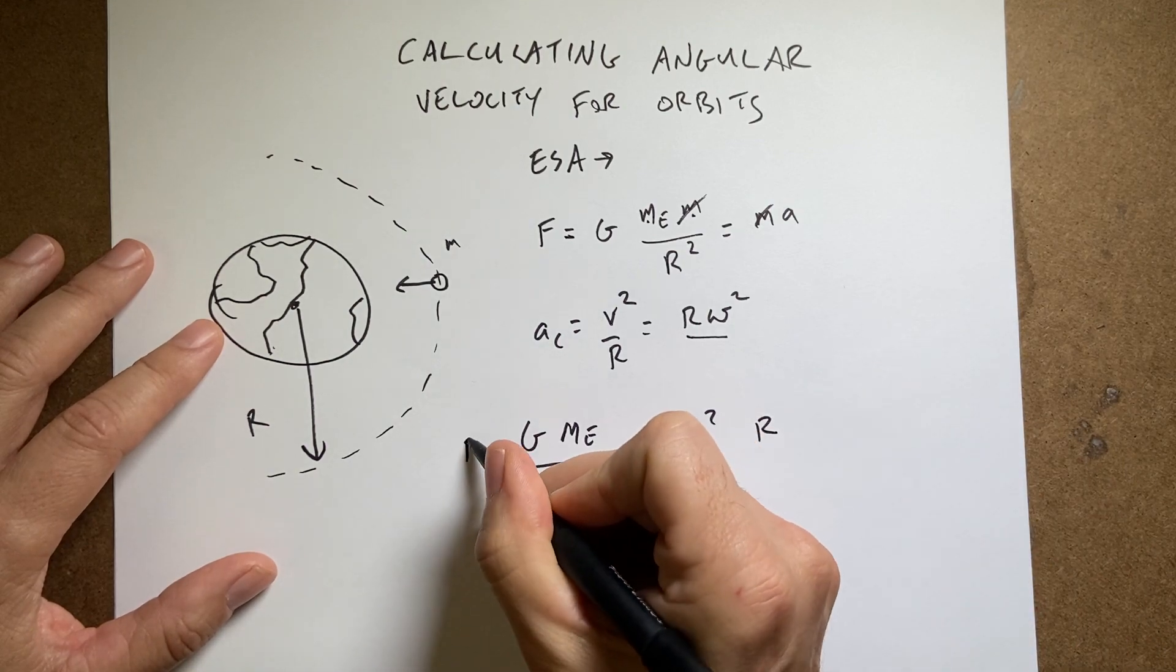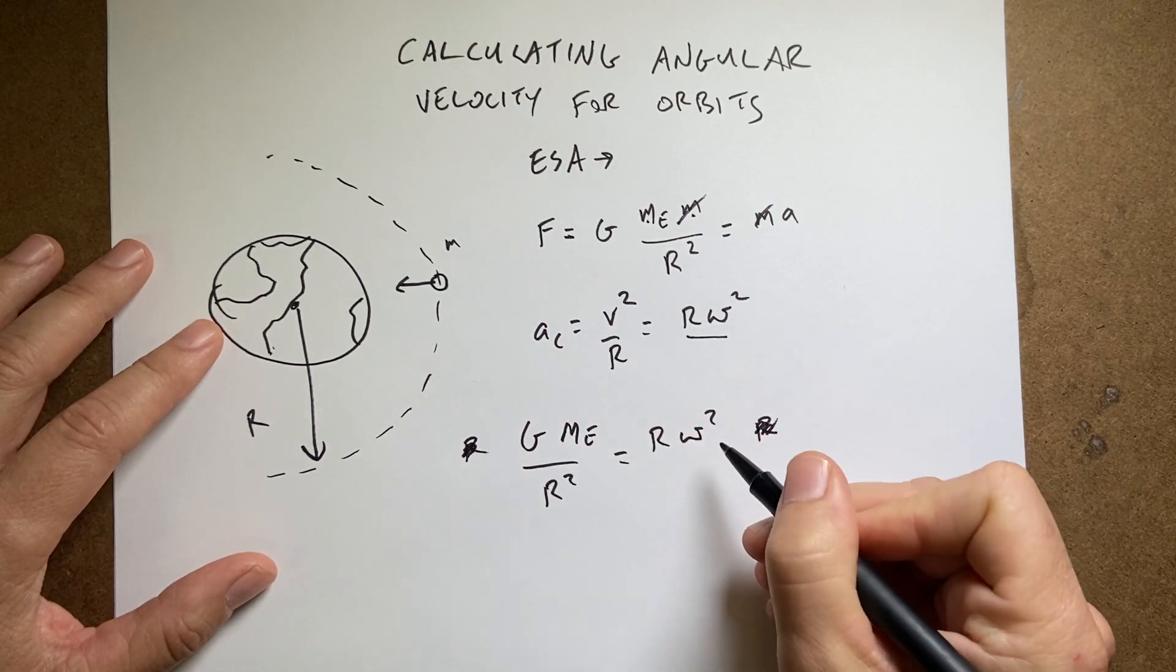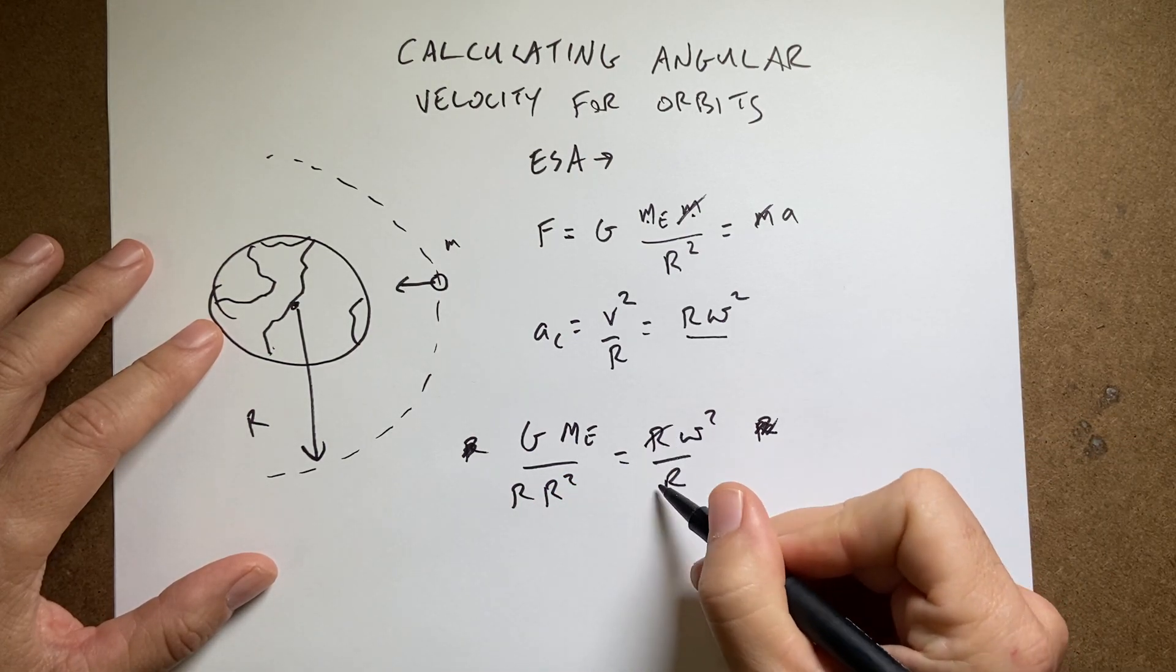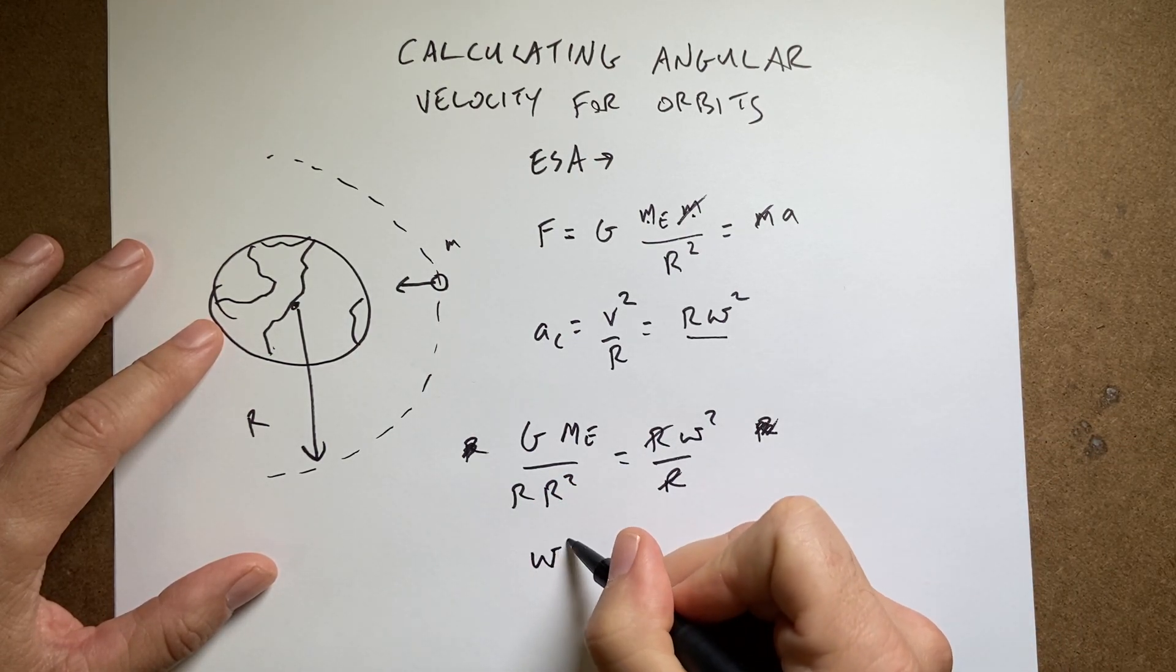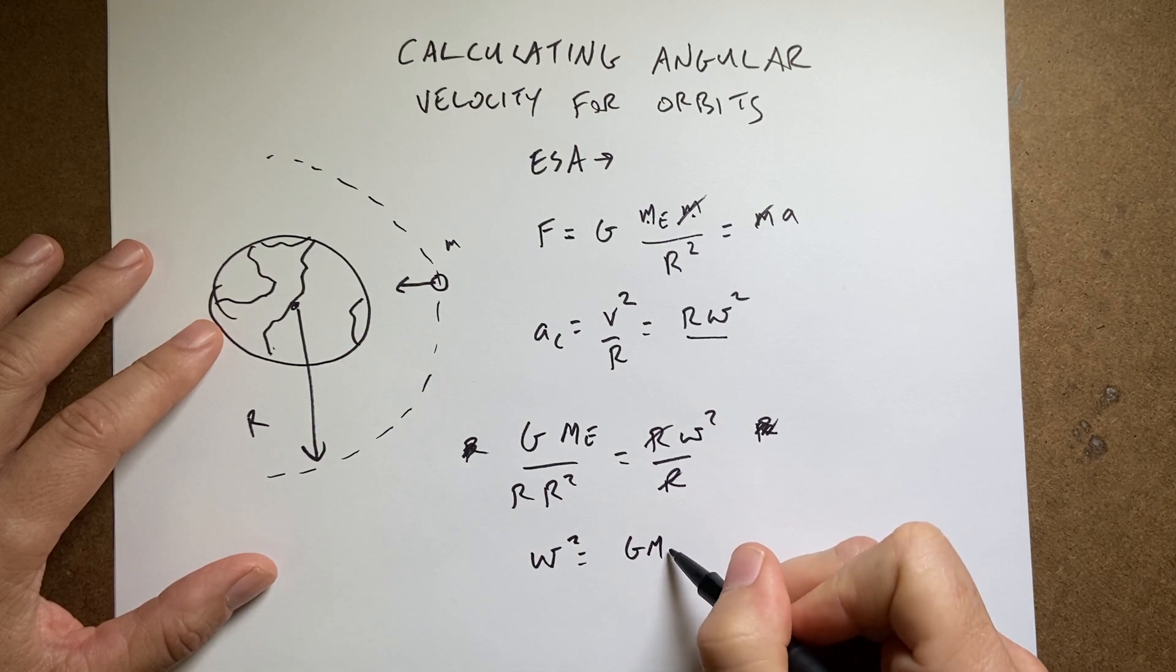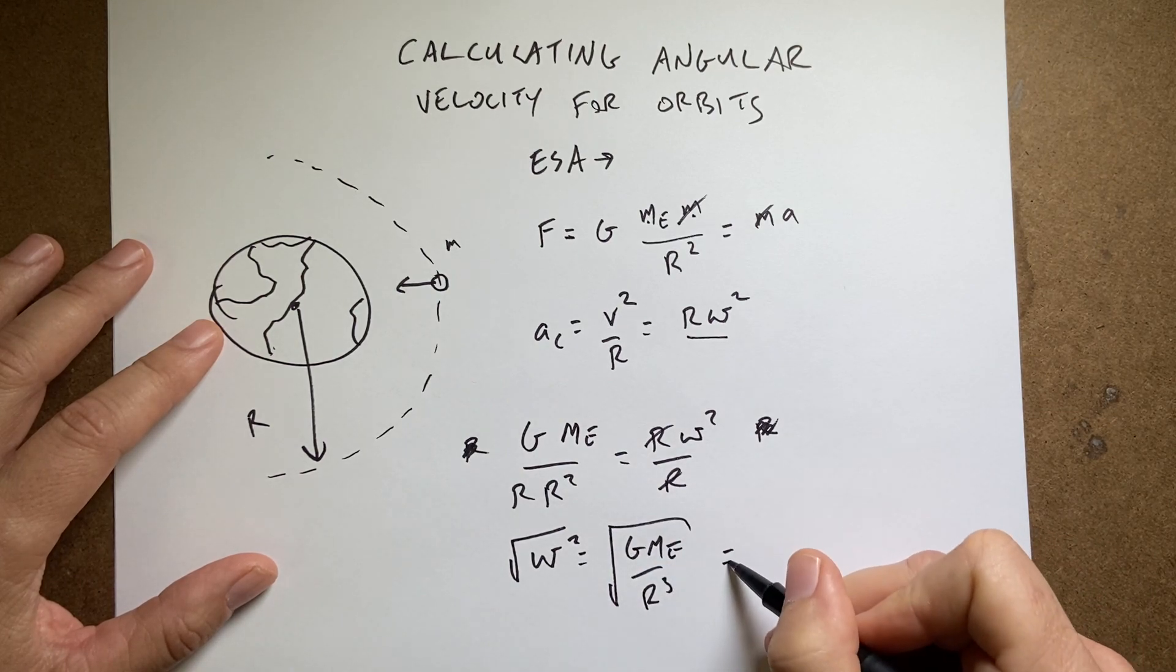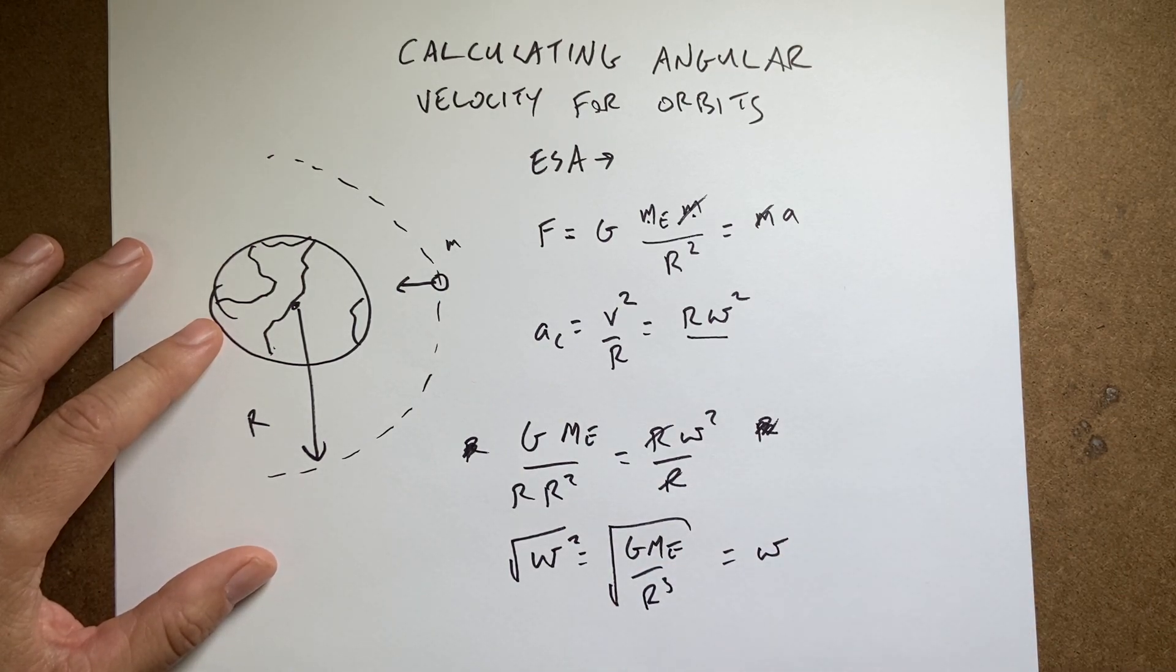Now I'm going to divide both sides by r. And I get, these cancel, and I get omega squared equals G Me over r cubed. And then I can take the square root of both sides. And then that is my angular velocity.